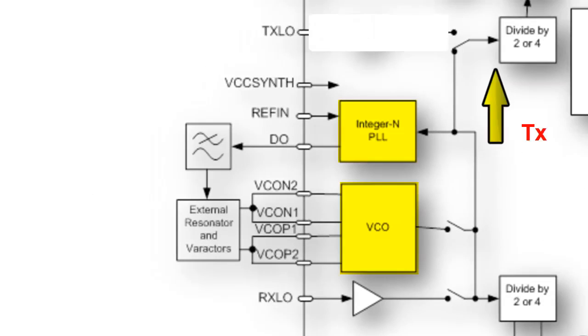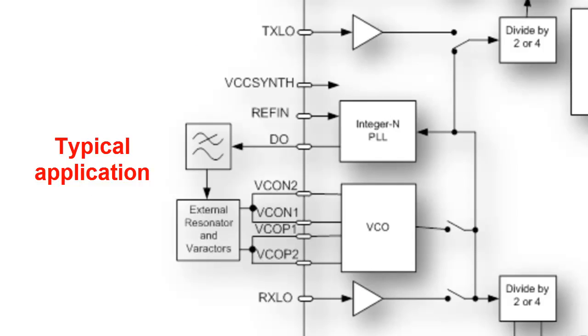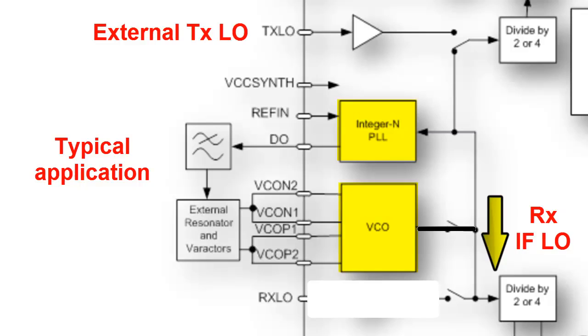The transmit LO and receive LO can be derived from the internal VCO and integer N PLL, or they can be sourced externally if desired. In a typical application, the on-chip VCO and PLL connect to the demodulator and provide the IF of a superheterodyne receiver, while the transmit LO is sourced externally.